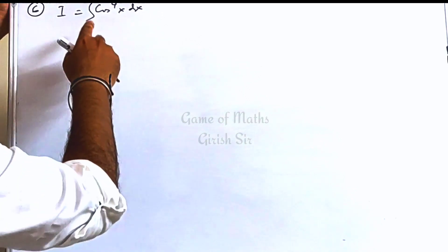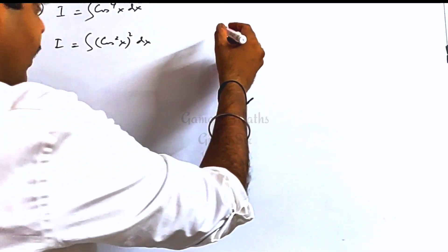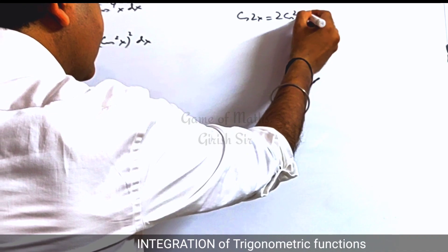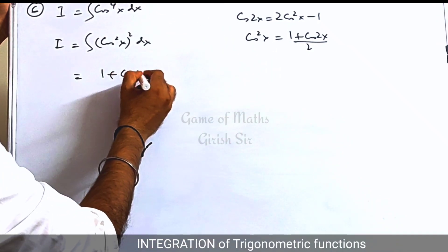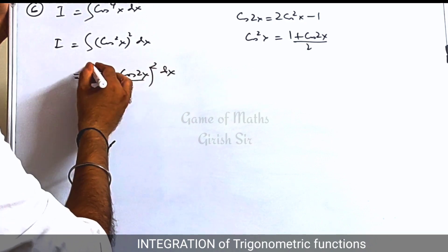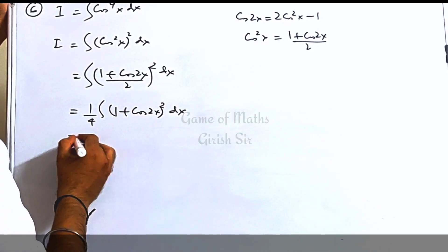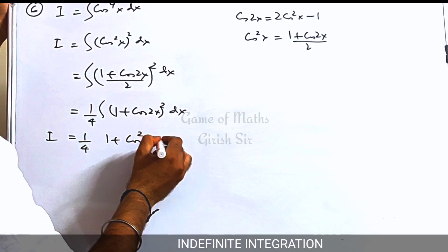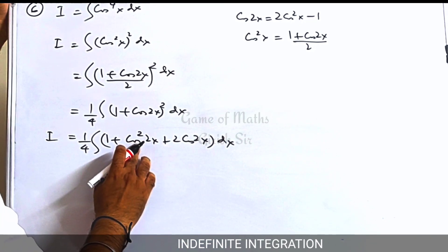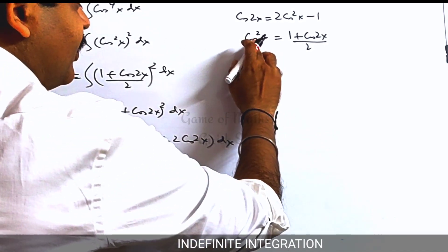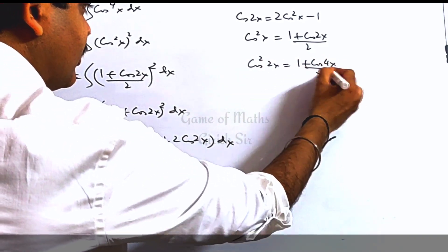The next question is the integral of cos x to the power 4. We write this as (cos squared x) whole squared. Now we use the result cos 2x = 2 cos squared x minus 1, so cos squared x = (1 plus cos 2x) divided by 2. Put the result here and expand using (a plus b) squared. The term cos squared 2x is not linear and cannot be directly integrated, so we write cos squared 2x as (1 plus cos 4x) divided by 2. Put this expression here.